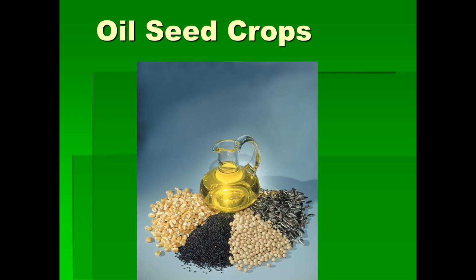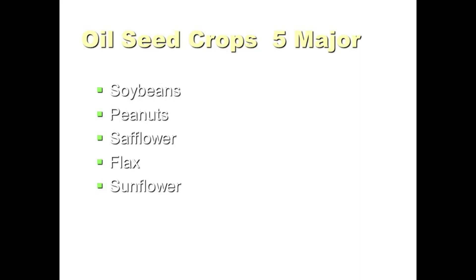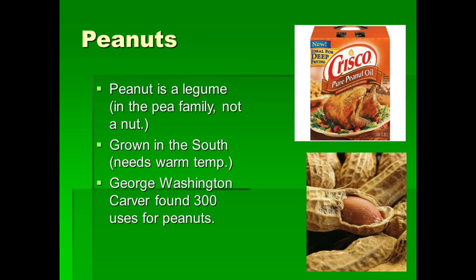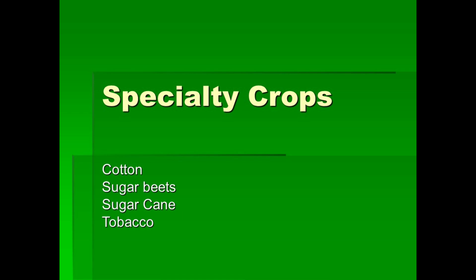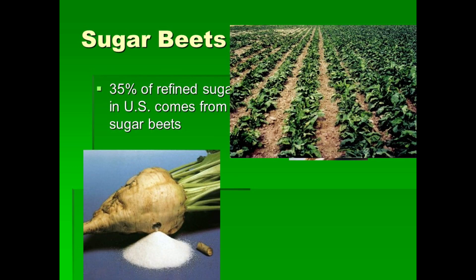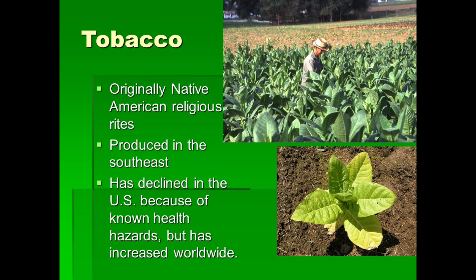Oil seed crops are grown for the purpose of oil extraction. Oil is present in their seeds, and oil content varies from one crop to another. Four major oil seed crops are soya beans, peanut, flax, and sunflower. Other specialty crops include cotton, sugar beets, sugar cane, and tobacco.